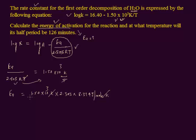Multiplying 1.50 by 2.303 by 8.314, the value we get is 28.72 — after rounding — multiplied by 10³, with units of Joules per mole.